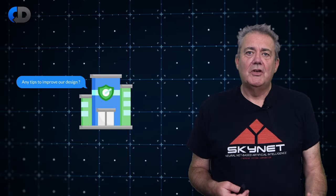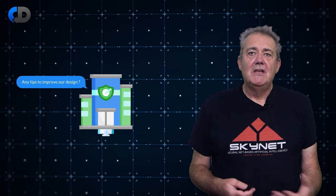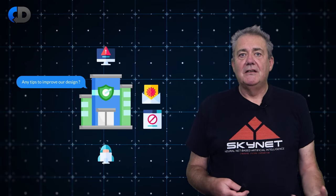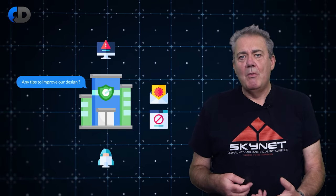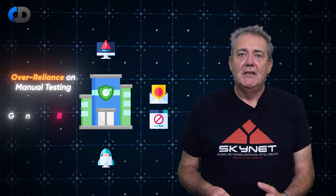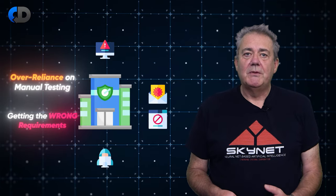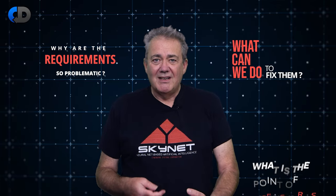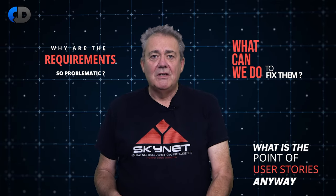I am often asked to advise companies on how to do a better job of software development. There are obviously lots of things that can go wrong with something as complicated as software development. But the two commonest causes of problems that I see are an over-reliance on manual testing and the topic of today's episode: getting the requirements wrong in the first place. So why are the requirements so problematic? And what can we do to fix them? And what is the point of user stories anyway?